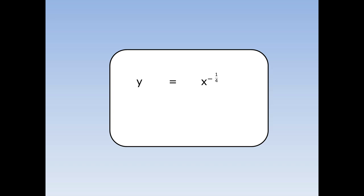Y equals x to the minus 1 quarter. Minus 1 quarter drops down the front to multiply, and minus 1 quarter take away 1 is minus 5 quarters.